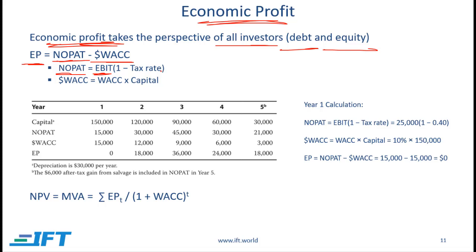Consider a simple example: if we have EBIT of 25,000 and the tax rate is 40%, then our NOPAT is 15,000. $WAC is calculated as our overall WAC percentage multiplied by the capital. In our simple example, if WAC is 10% and capital is 150,000, then $WAC equals 15,000.